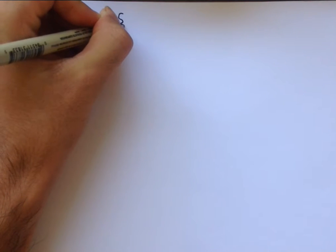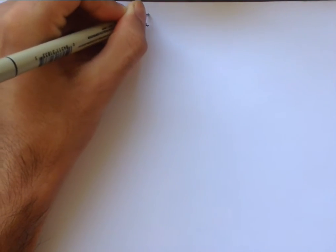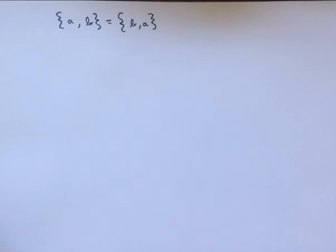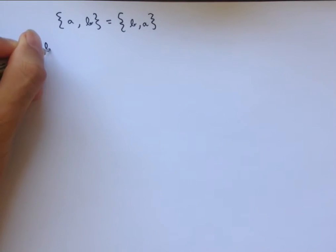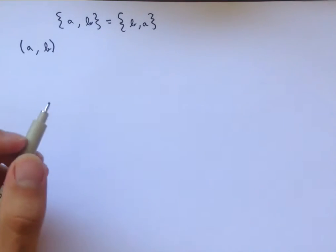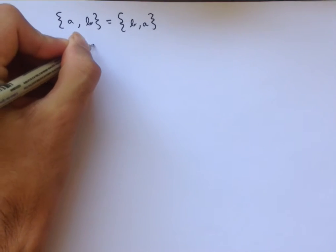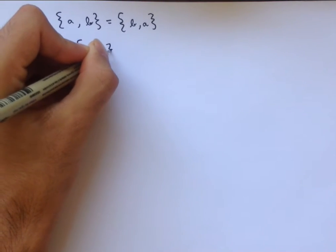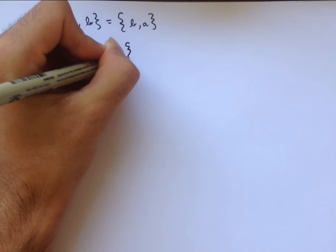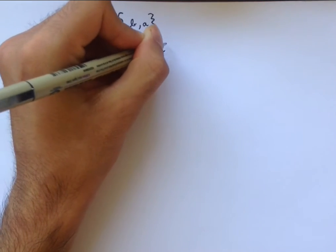Recall that the set containing A and B is equal to the set containing B and A. And so when we want to represent ordered pairs, we're going to have to come up with a way to say which element comes first. And so to do this, we're going to represent the ordered pair A and B, which we use parentheses to denote, as the set containing the singleton A and the doubleton A and B.